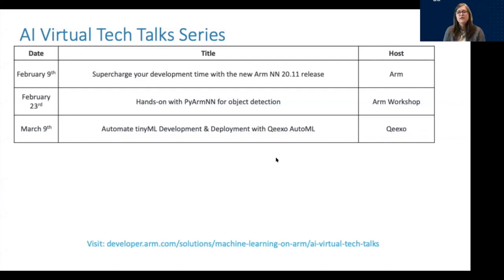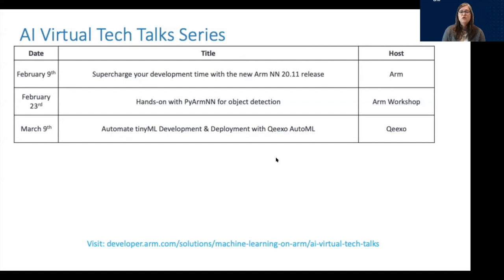We've got ARM engineers coming to talk about our new ARMNN 2011 release — a lot of features and functionality in there that you don't want to miss. And then we're going to have a workshop, the first workshop that we have done for this tech talk series. We're going to show you how you can use PI ARMNN for object detection. And then coming up in March, we've got Kikso, another great partner of ours in our ecosystem.